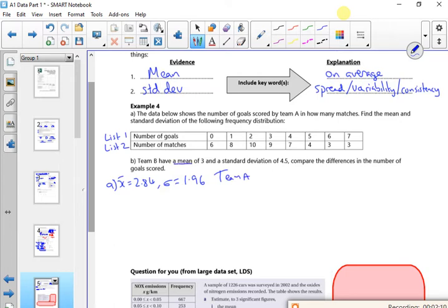So team B have a mean of 3. So on average, team B scored more goals because their average is higher. Now, you've got to remember, it's got to make sense.